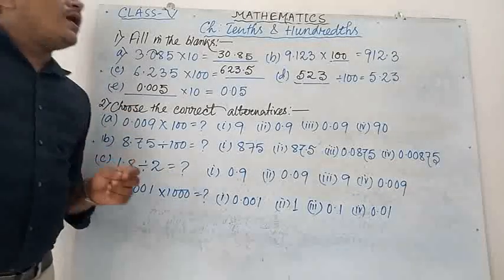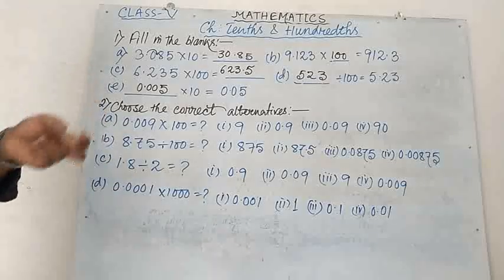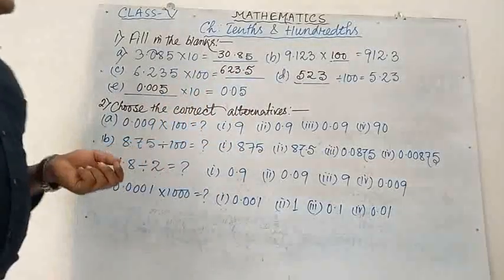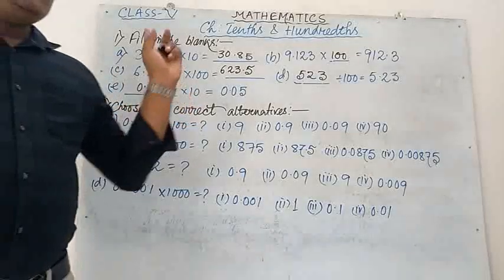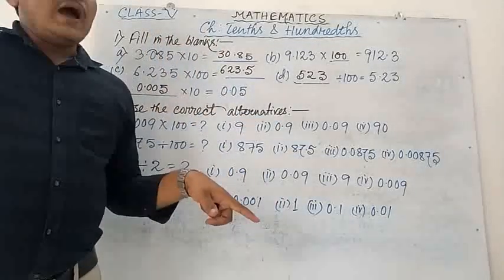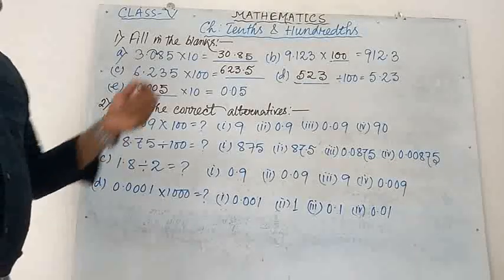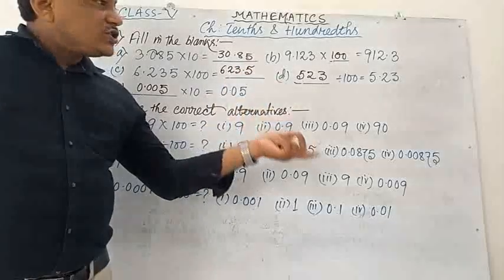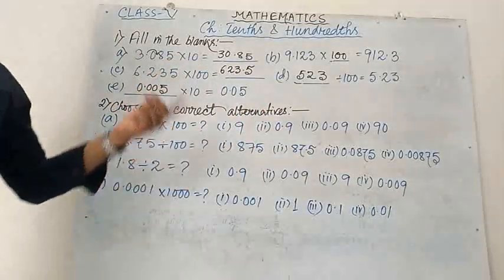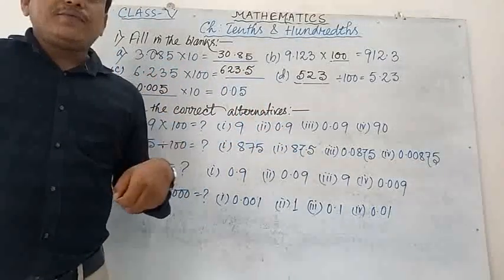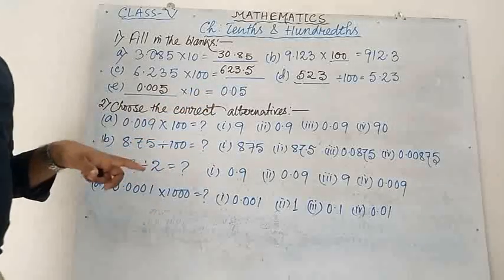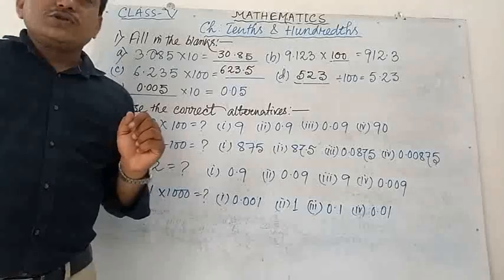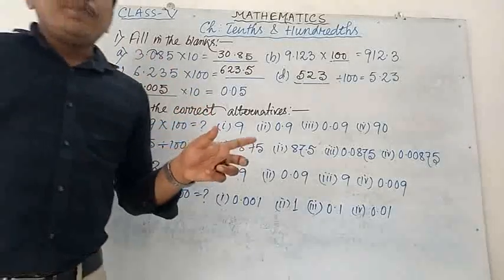Just keep it in mind: when we are multiplying by 10, 100, or 1000, the point will shift to the right. And when we are dividing by 10, 100, or 1000, the point will shift from its current position to the left. In this type of problem, no need to do the normal division procedure — just shift the point.